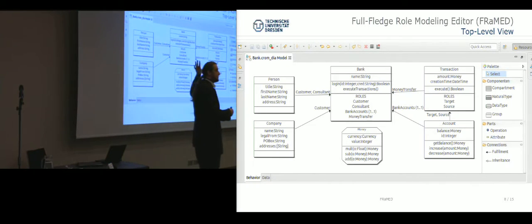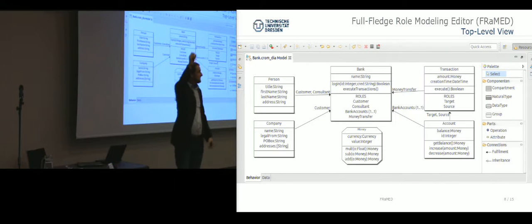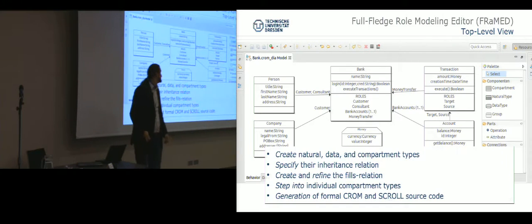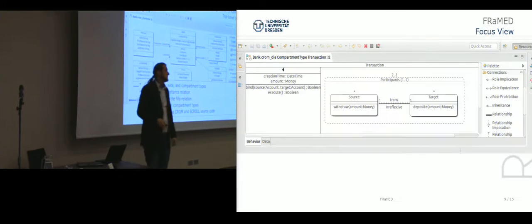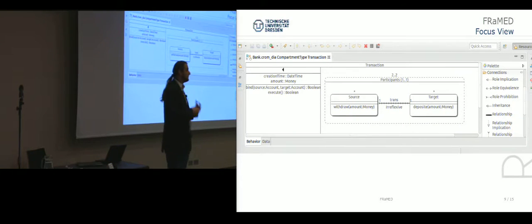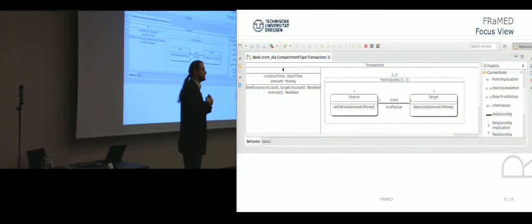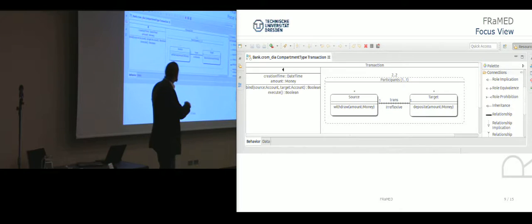On this top level view you basically have a bird's eye view on your application. You can see the different collaborations, different things that are going on. But you can go into each of these compartments and look into them, and then get a focus view of this compartment where you can focus on the individual interaction you want to model. Here we model a transaction from a source to a target account. We can specify the relationships between the two roles and further specify constraints between the entities.